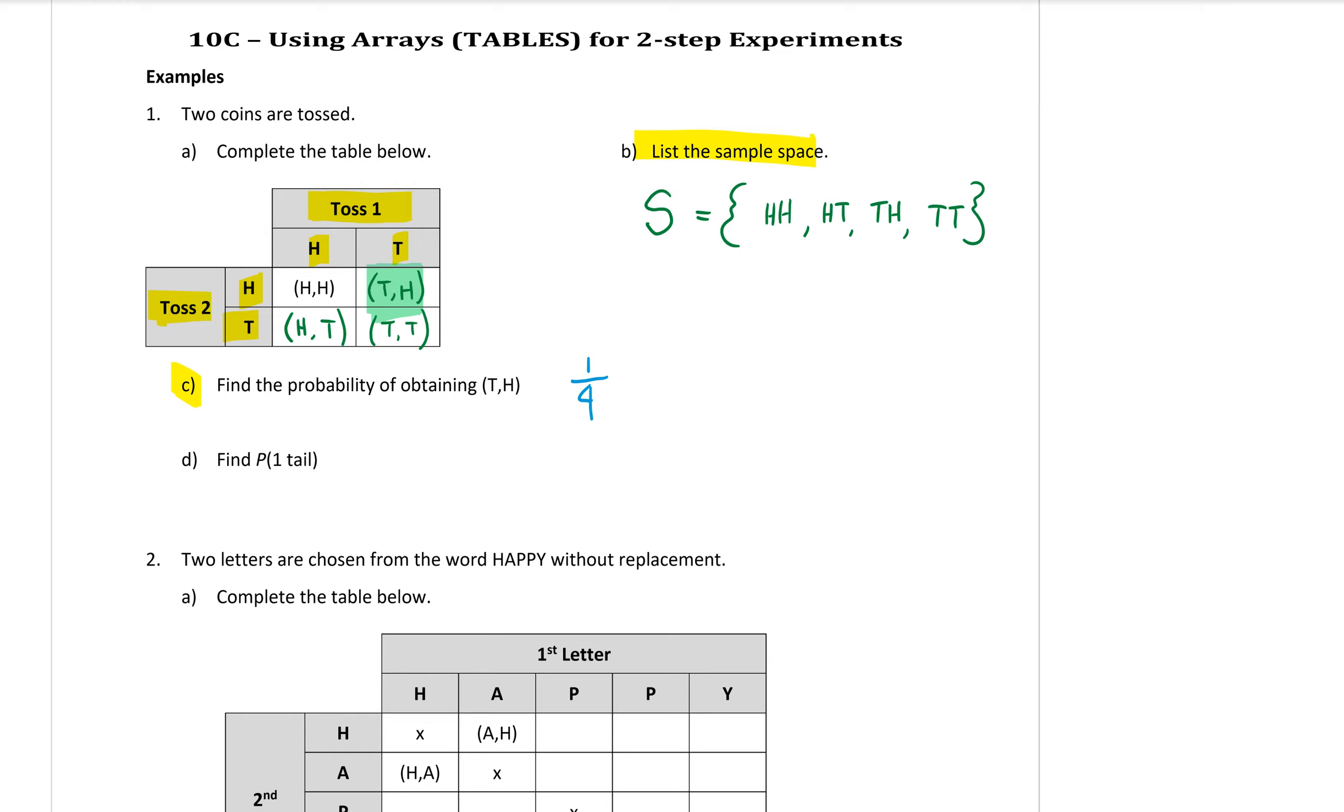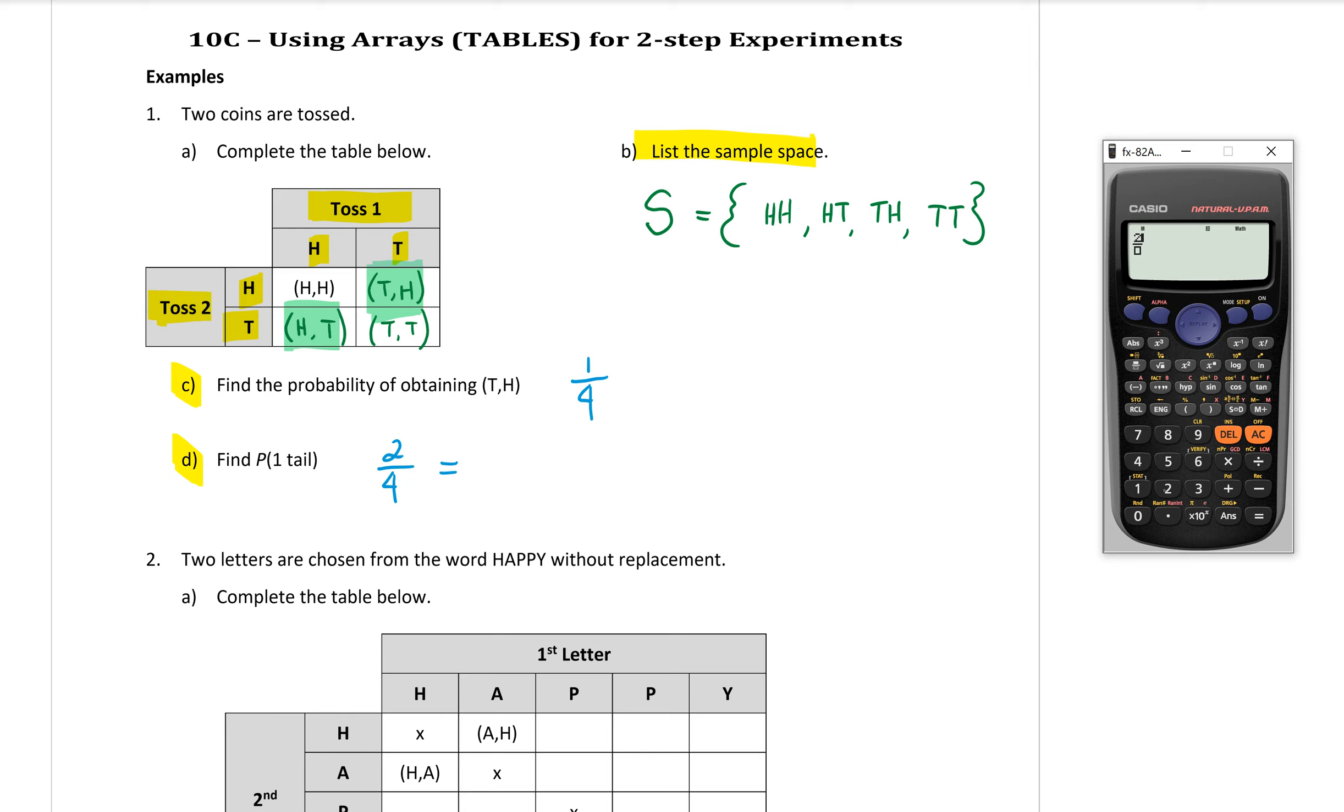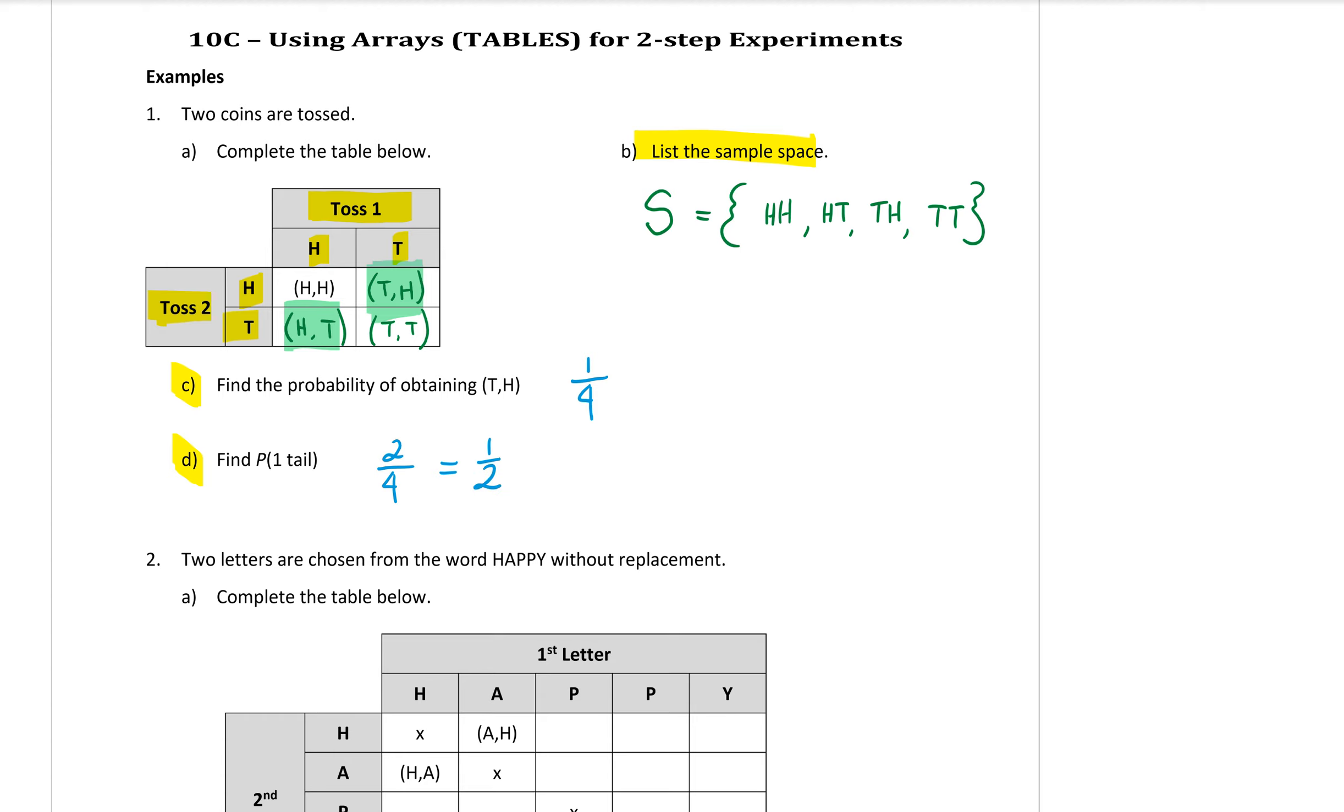However, that is different if I look at part d here. It says find the probability of getting one tail. That then means it doesn't matter if I get the tail first or the tail second. I want either of these two options. So the two that are now highlighted, they both have one tail in them, exactly one tail. I don't want two tails. So that now means that I have a probability of two out of the four outcomes, which we can simplify. Remember you can use your calculators to simplify things. So two over four, which simplifies to a half.